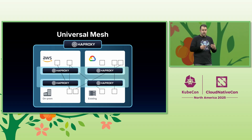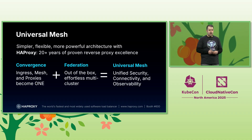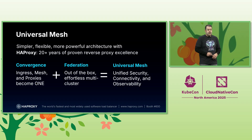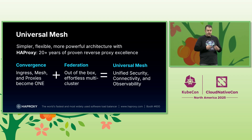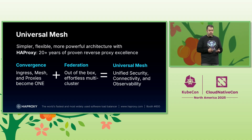This is our approach: the universal mesh. It's a simpler, flexible, more powerful approach, backed by HAProxy with 20-plus years of proven reverse proxy experience. It focuses on convergence — the ingress, the mesh, the proxy all become one. It's federated out of the box, enabling effortless multi-cluster, multi-cloud, equaling unified security, connectivity, and observability, all from the authoritative expert at HAProxy, authors of the world's fastest application delivery and security platform.